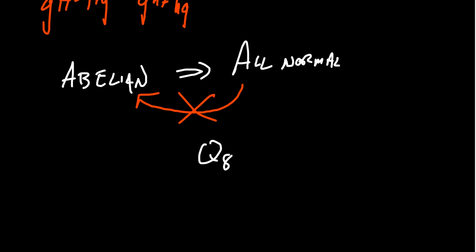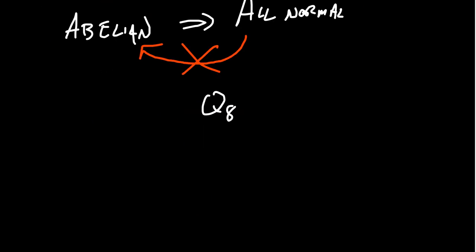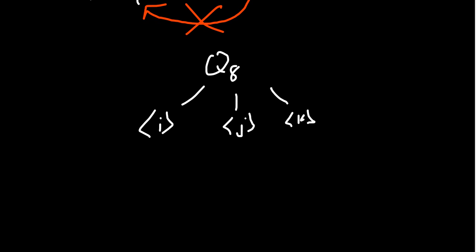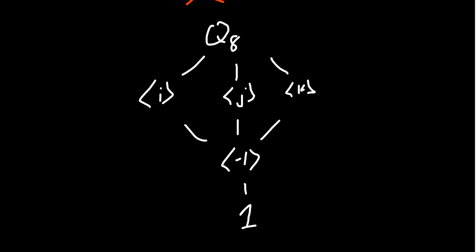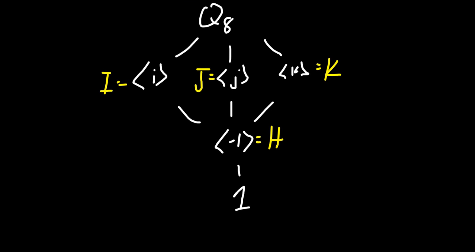The prime example — sort of the smallest example — would be Q8. If you think of the subgroups of Q8, let me draw the Hasse diagram. You get the cyclic subgroup generated by i, the cyclic subgroup generated by j, then the subgroup generated by k, and the intersection of each of these groups is going to be the cyclic subgroup generated by negative one. And then this is above the trivial subgroup itself. These are all the subgroups of the quaternion group. For simplicity, we'll call these capital I, capital J, capital K, and let's call the one generated by negative one H.